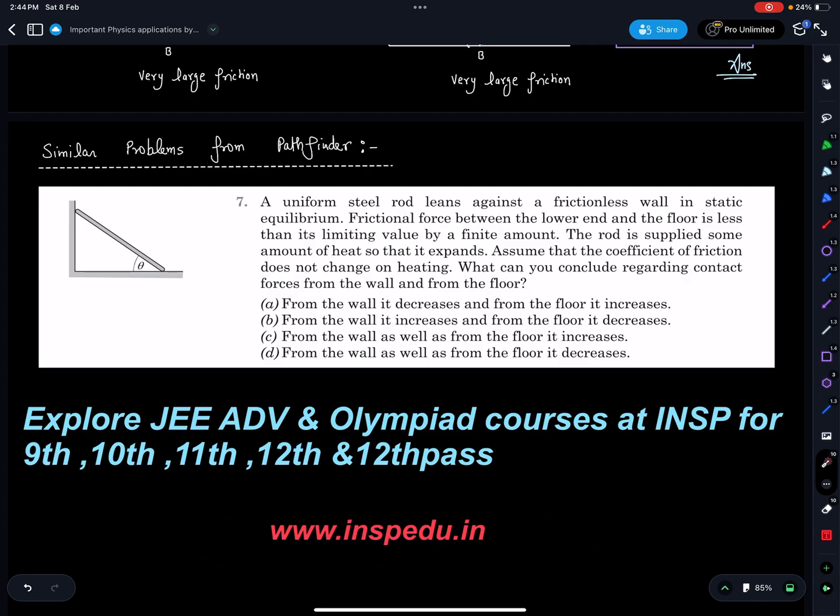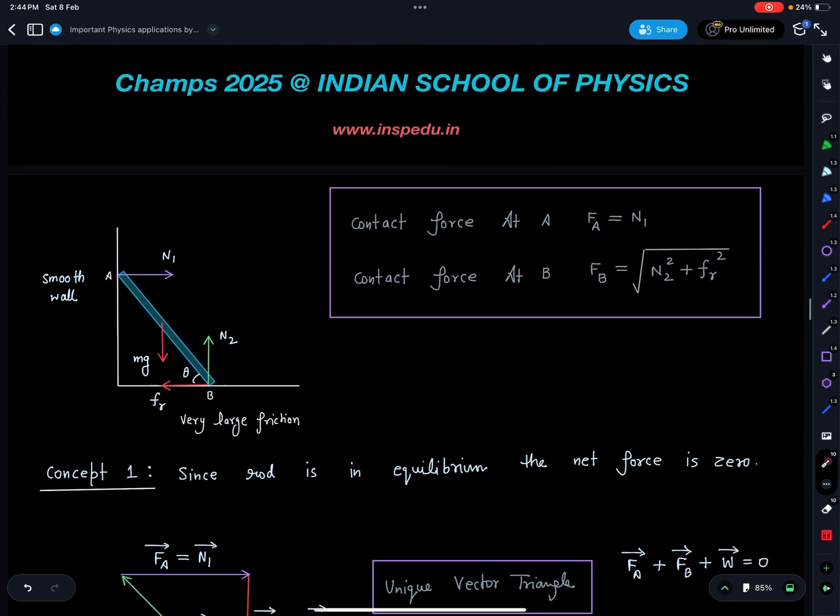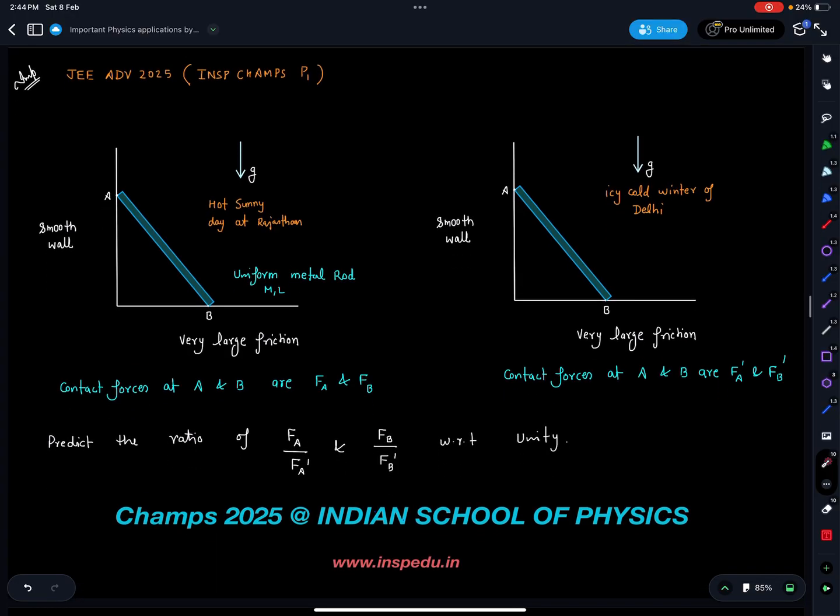So you can explore INSP website for our JEE Advanced and Olympiad courses for class 9, 10, 11, 12, 12 pass. I hope these concept builder videos are helping you. And yes, if you have any specific problem in mind which is around JEE, because the idea of these videos will be to play around JEE Advanced 2025, you can share those problems in Telegram group or personally with me. I'll pick up those problems in one of these discussions, as I promise that we'll try to go for 100 such videos and such concept builders before JEE Advanced 2025.